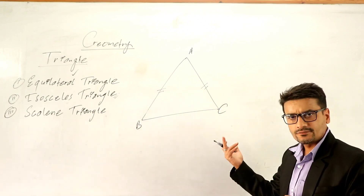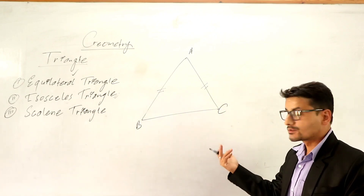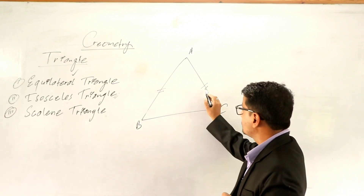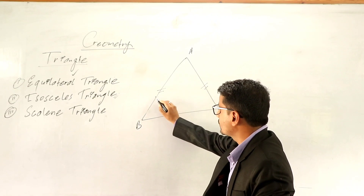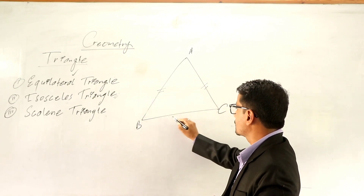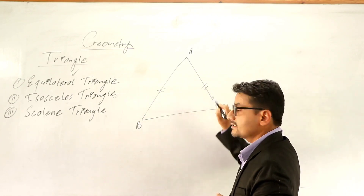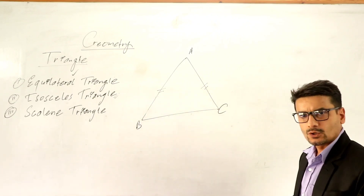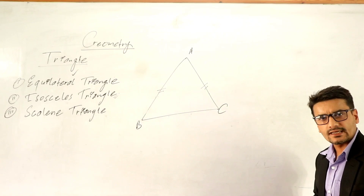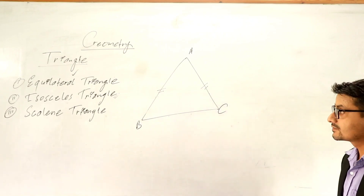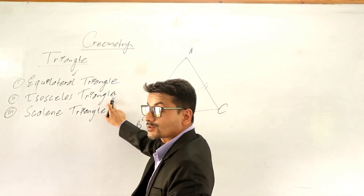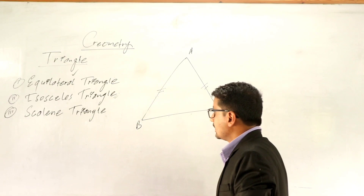Any two sides, if equal, it is an isosceles triangle. It is not necessary for these specific two sides to be equal — any two sides of the triangle. If any two sides are equal, then we have to say that is an isosceles triangle.